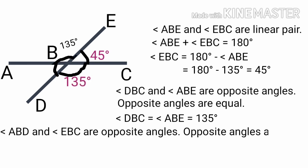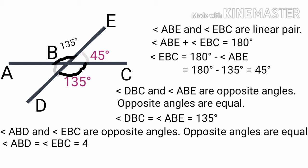Angle ABD and angle EBC are opposite angles. Therefore angle ABD is equal to angle EBC. Angle EBC is 45 degrees. Therefore angle ABD is equal to 45 degrees.